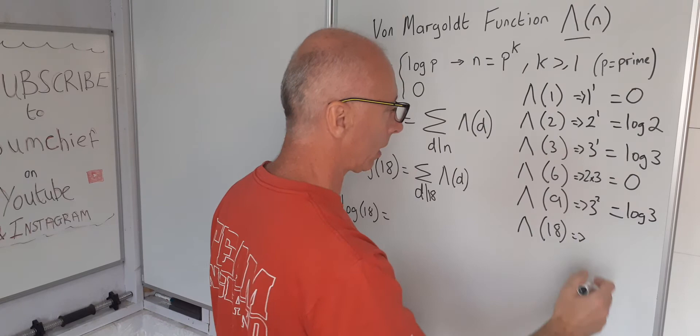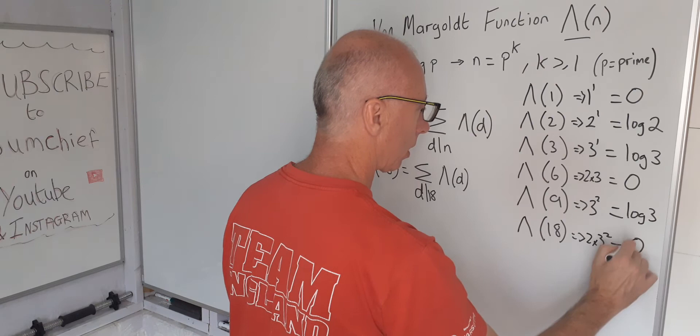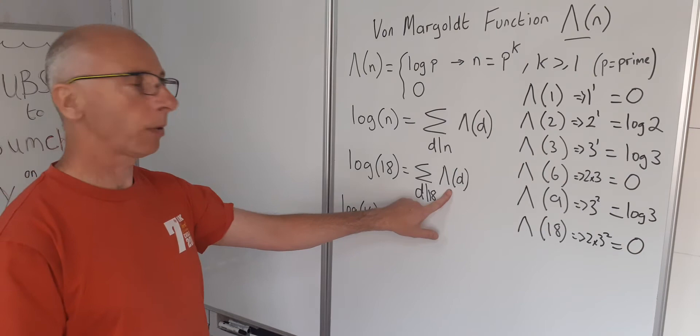And then 18. We can't take the square root of 18 without having a remainder, so in which case I just say it's 2 times 3 squared. In which case it takes the value 0.